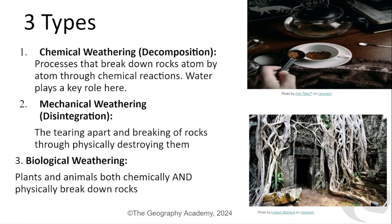Biological weathering can be done by both plants and animals, and it may be considered chemical or physical depending on what's happening. In the image here with the trees in Angkor Wat in Cambodia, the roots are breaking through the rocky temples and starting to break them apart — so that would be considered biological weathering that is physical.